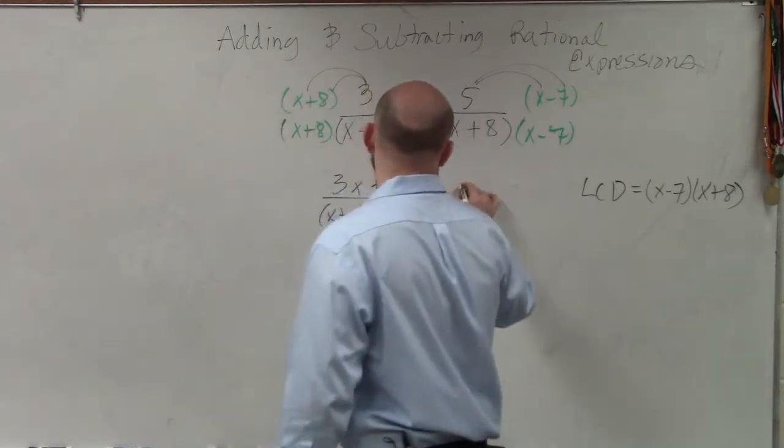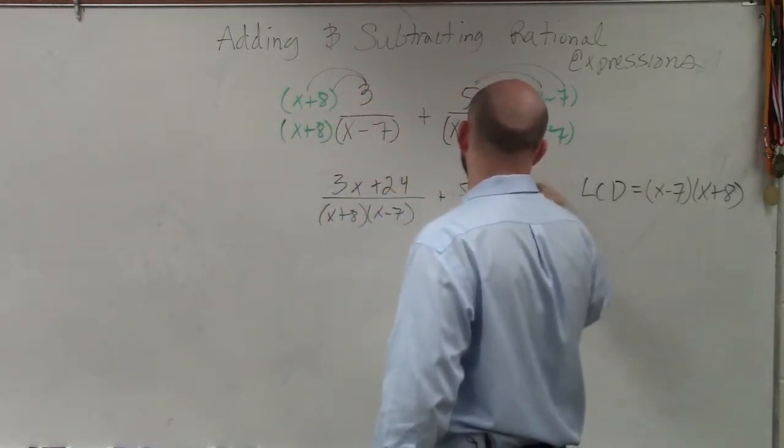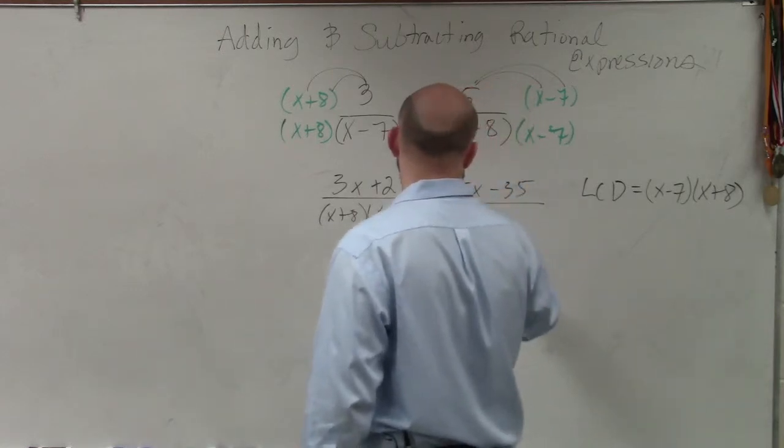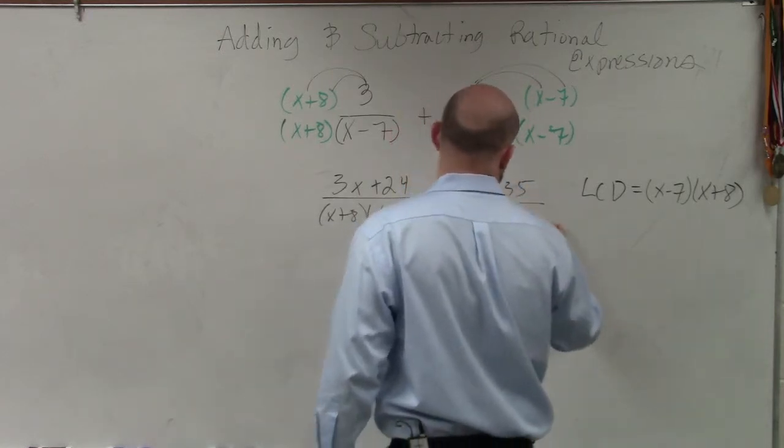5 times x is a positive 5x, 5 times negative 7 is a negative 35, over x plus 8 times x minus 7.